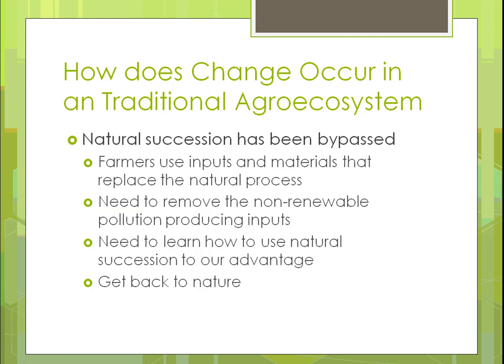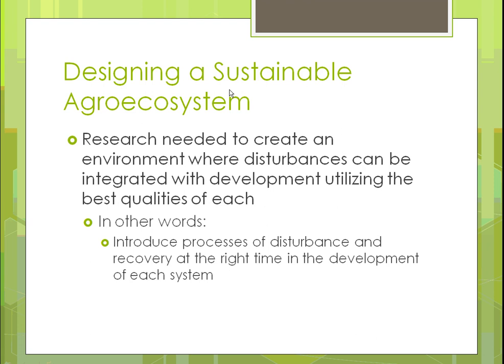Natural succession has been bypassed — we're going in and creating the interferences. One example is farmers putting in inputs, changing the organisms based on fertilizers, pesticides, and herbicides, because the natural process would have taken care of things that weren't good. We need to remove non-renewable, pollution-producing inputs such as mechanized equipment, and learn to use natural succession to our advantage — going back to nature instead of using human inputs that aren't really working.